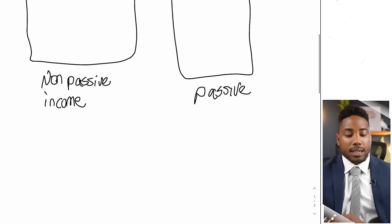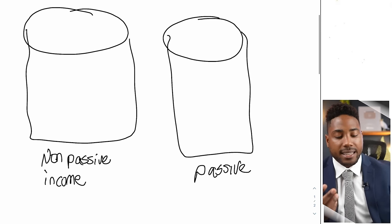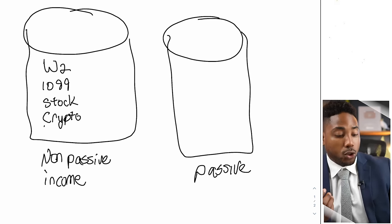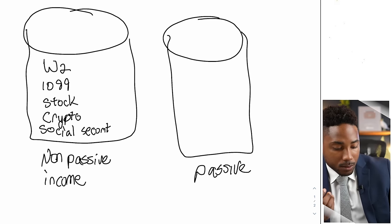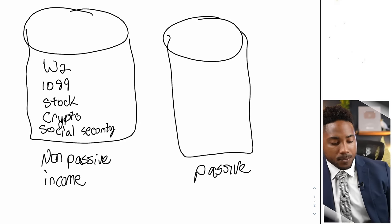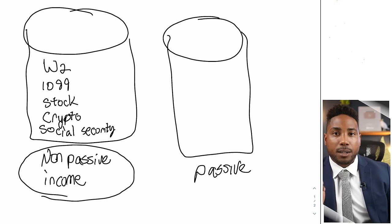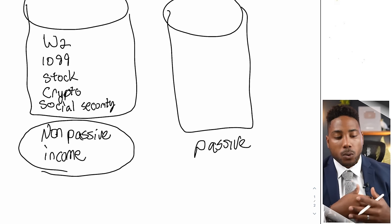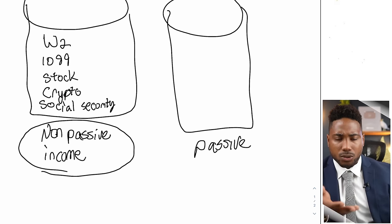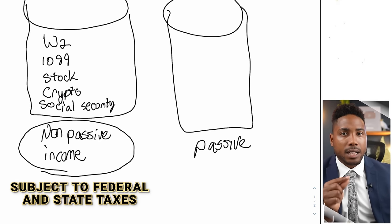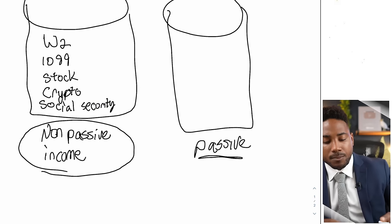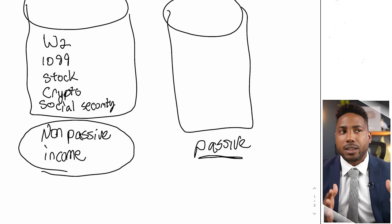The non-passive income bucket is filled with W-2 income, 1099 income, stock income, crypto income, and social security income. Our non-passive income bucket is filled with things that require us to do work. These types of income are subject to federal and state taxes, and in some cases, social security and Medicare tax.